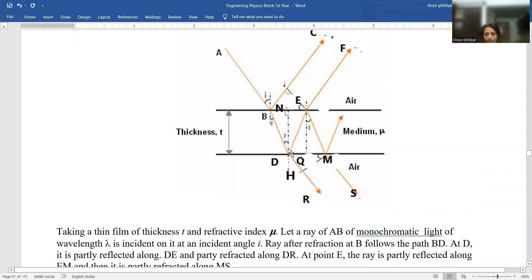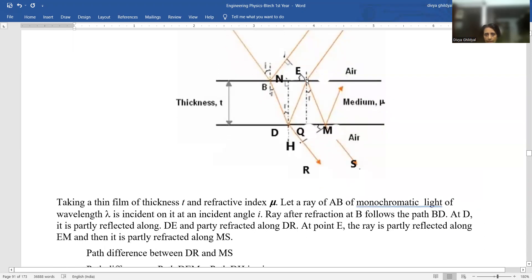Ray after refraction at B follows the path BD at D. It is partly reflected along DE and partly refracted along DR. At point E, the ray is partly reflected along EM and it is then refracted along MS.